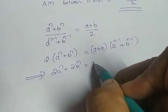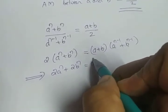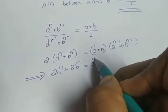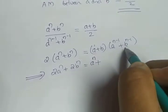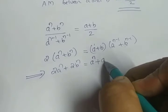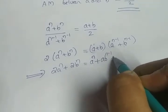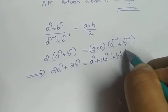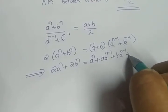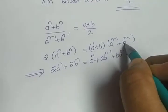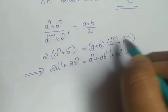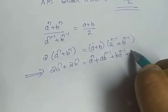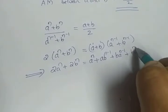a times a raised to n minus 1 gives a raised to n, because 1 plus n minus 1 equals n. The second term is a times b raised to n minus 1 — no change. Plus the next term: b times a raised to n minus 1, which we cannot simplify further. And the last term: b times b raised to n minus 1, which is b raised to 1 times b raised to n minus 1, giving b raised to n, since 1 plus n minus 1 equals n.